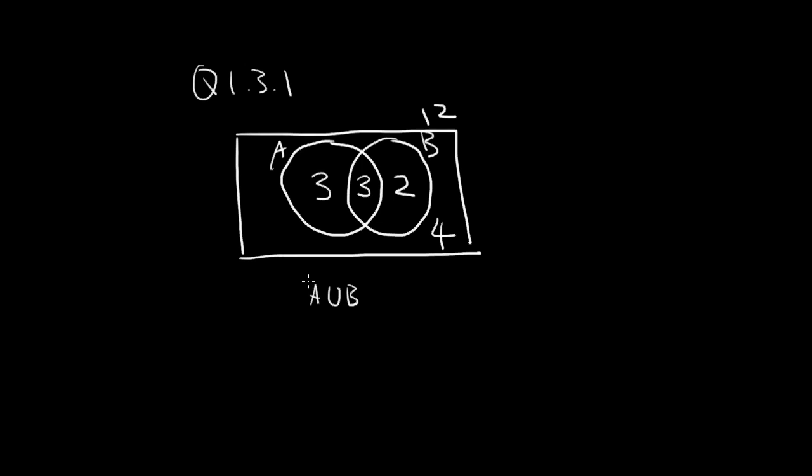The question asks for the set A union B prime, which, you know, from the previous sections, that's the outside area. So the answer is 4.